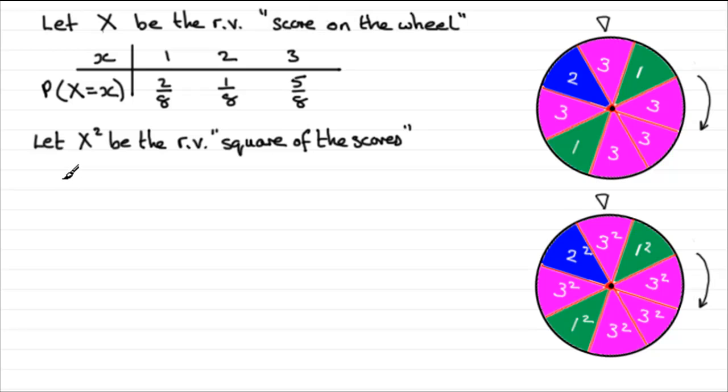Our observed value, instead of being the score X up here on the wheel, is now going to be the square of those scores, so basically X². And what could they be? Well, we can see that you could get 1², which we know is 1.